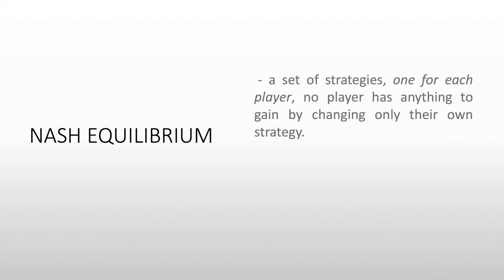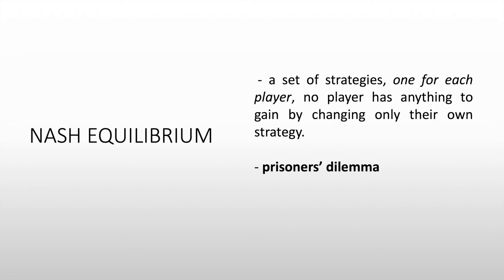Our last notion for Game Theory is Nash equilibrium. Nash equilibrium is a set of strategies, one for each player, where no player has anything to gain by changing only their own strategy. What we want is to look for the equilibrium for each player — what action should they take so that neither of them would want to change their own strategy.